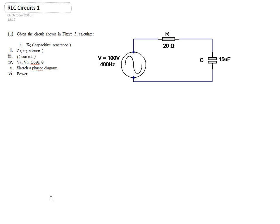In this example, we're going to look at the behavior of current and voltage in an RC circuit, where the supply voltage is 100 volts at a frequency of 400 hertz. The resistor has a resistance of 20 ohms, and the capacitor has a capacitance of 15 microfarads.